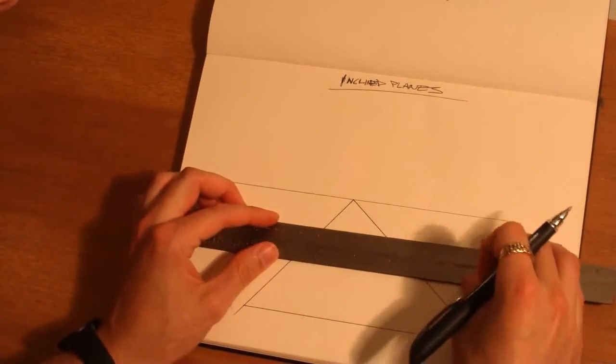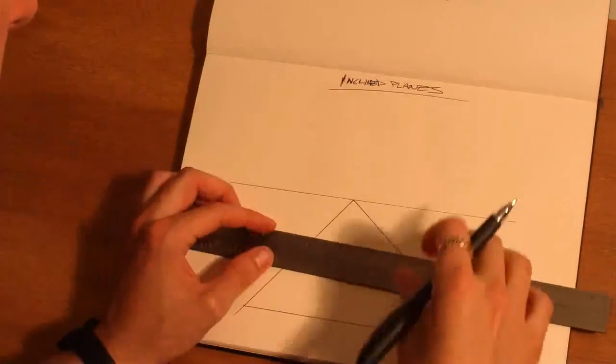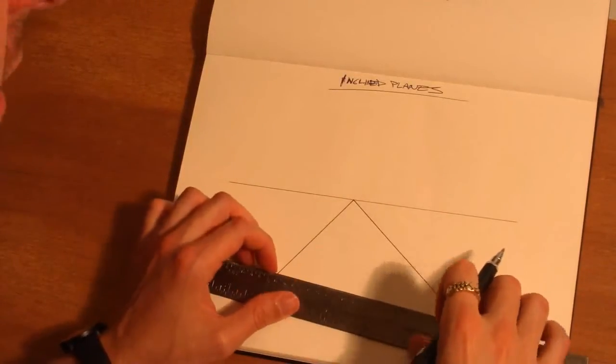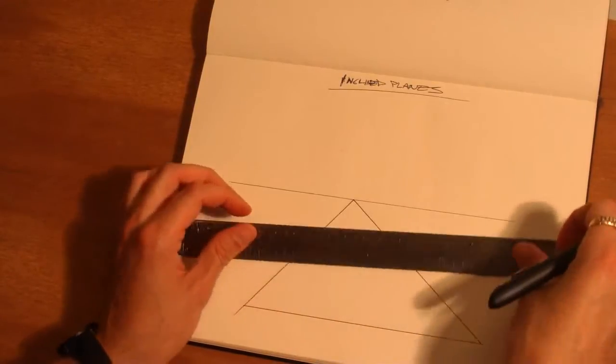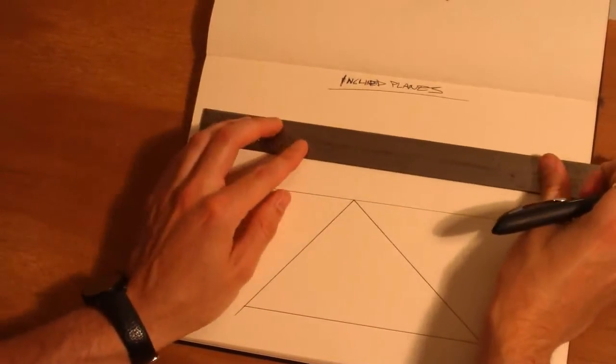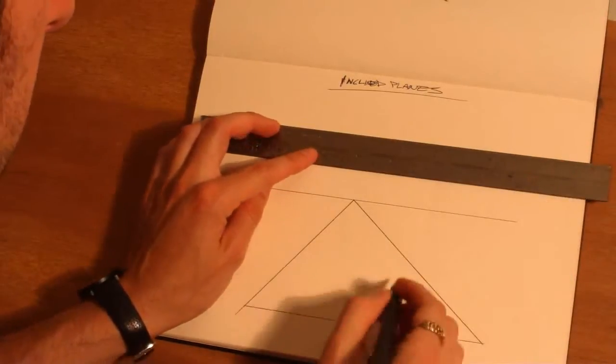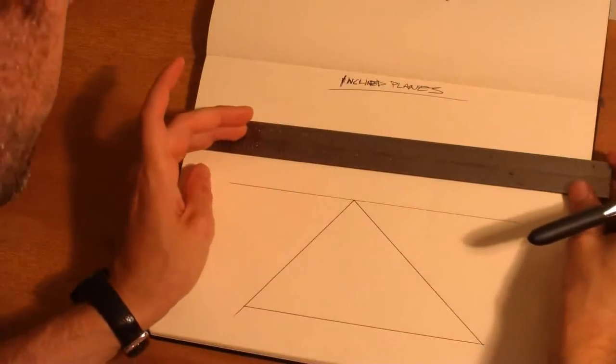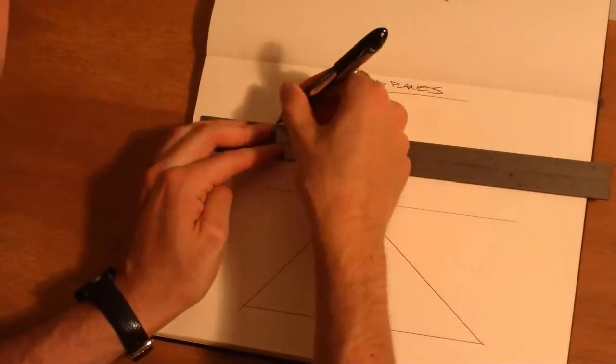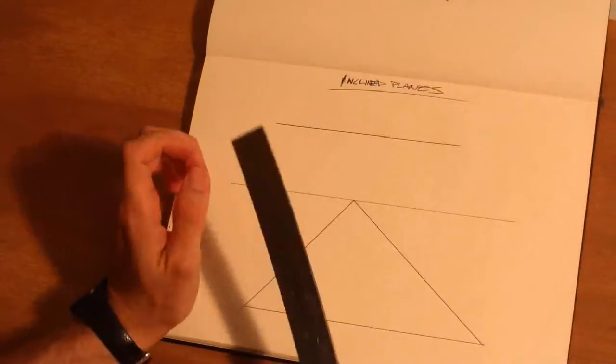So what you're going to have to do to create an inclined plane within this space is create another horizon line with another vanishing point on it. So let's say we're going to put a plane on top of this plane. It's a little smaller. We're going to create another horizon line parallel to our existing one.